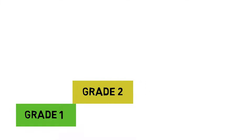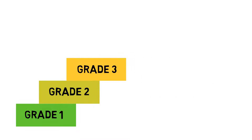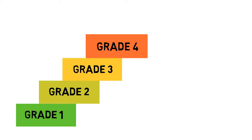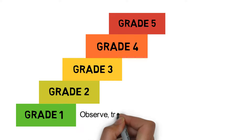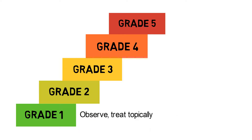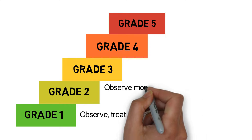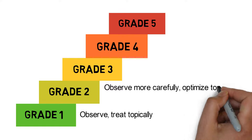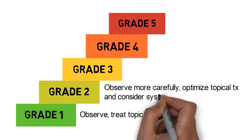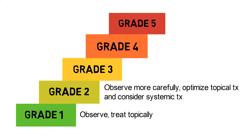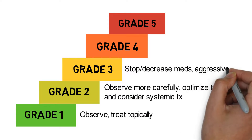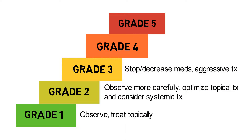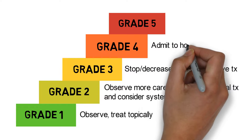This grading system provides a stepwise approach to managing the patient. While specific toxicities may be managed differently, generally for grade 1 we observe and treat topically. For grade 2, we observe more carefully, optimize topical treatment, and consider systemic treatment. For grade 3, we stop or decrease medication and provide more aggressive treatment. For grade 4, we admit the patient to hospital for management.